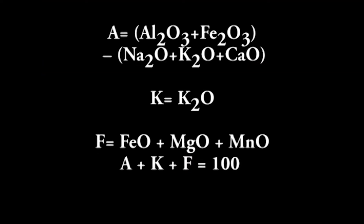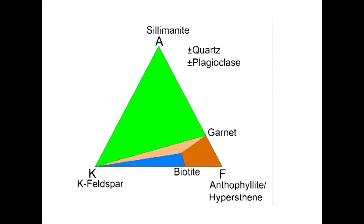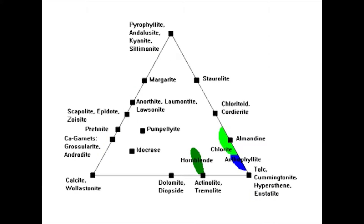The calculation scheme is as follows: A equals Al2O3 plus Fe2O3 minus, under bracket, Na2O plus K2O plus CaO. K equals K2O. F equals FeO plus MgO plus MnO. Therefore, A plus K plus F equals 100 percent in molecular percentage. Minerals whose composition contains only A and F components occupy the same position in the AKF diagram as in the ACF diagram.